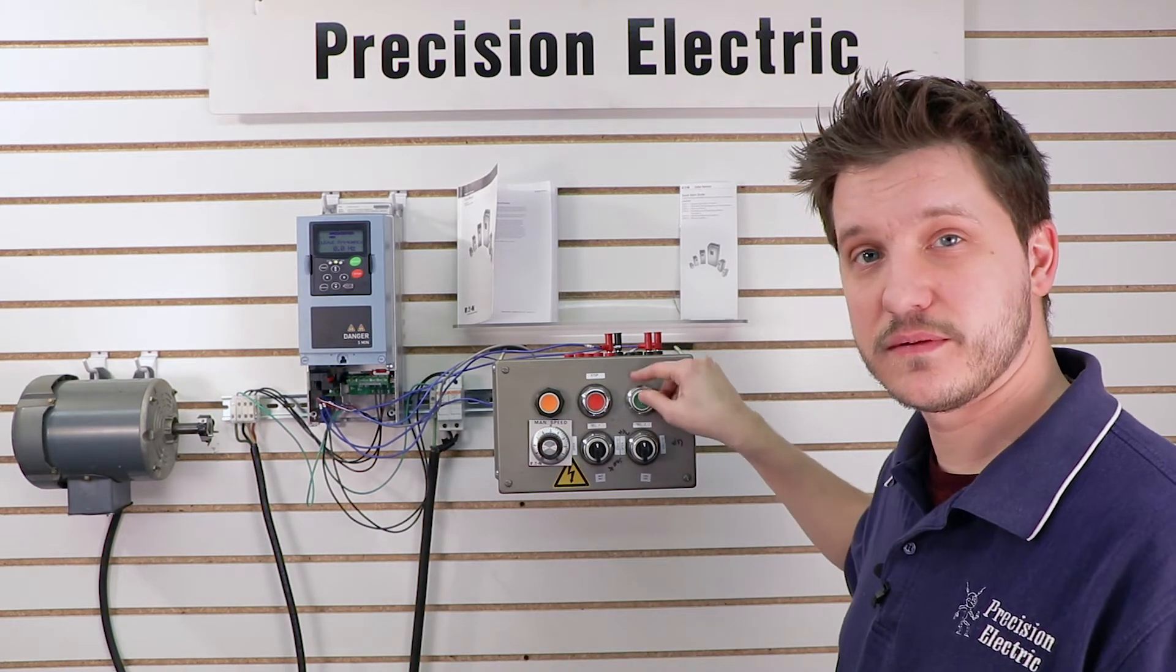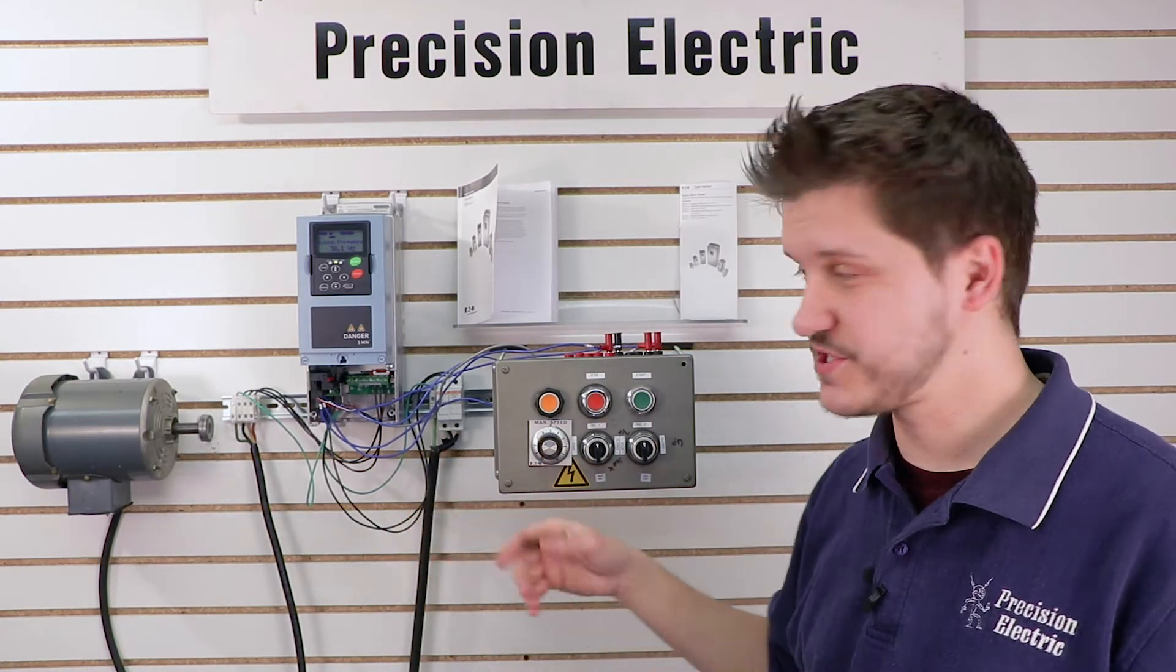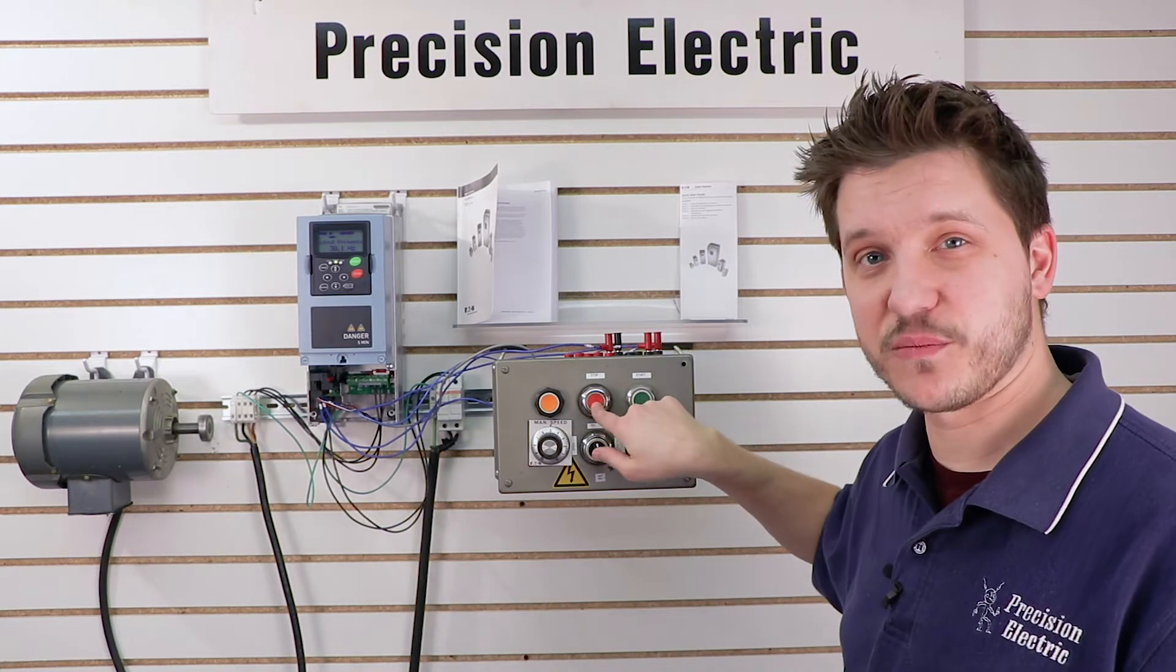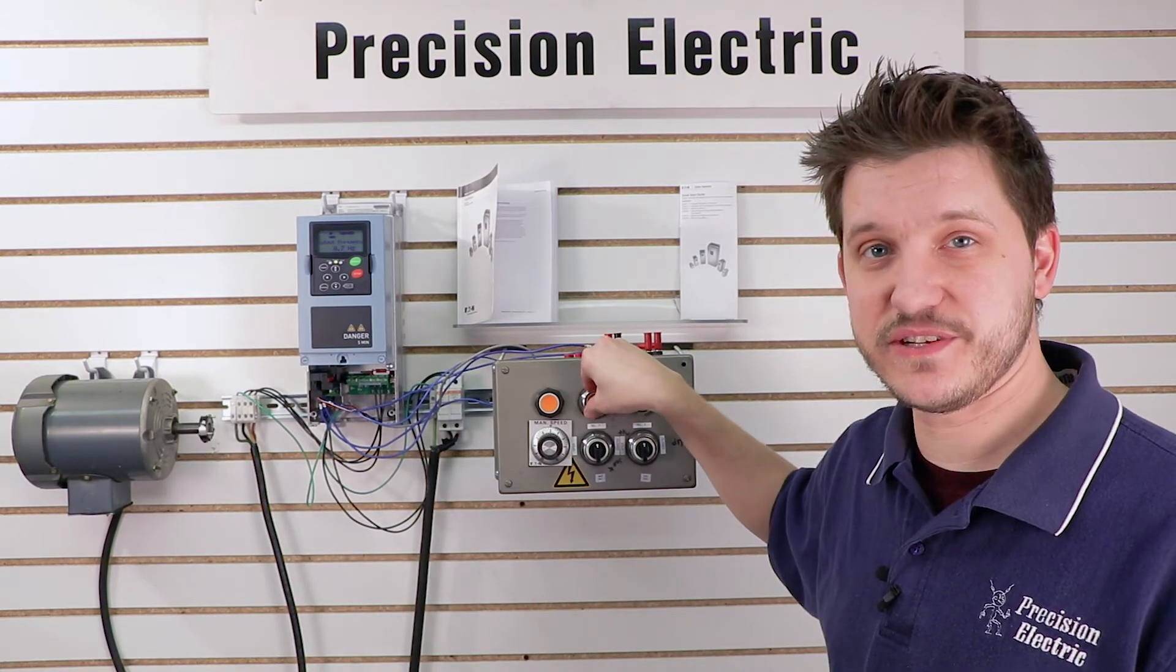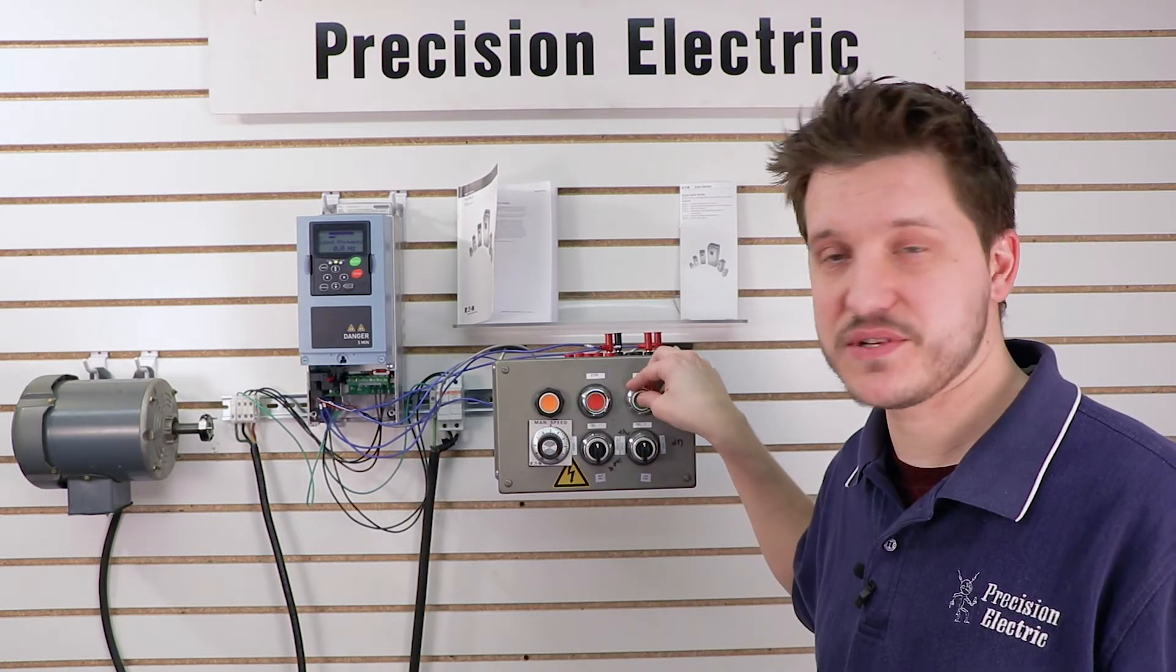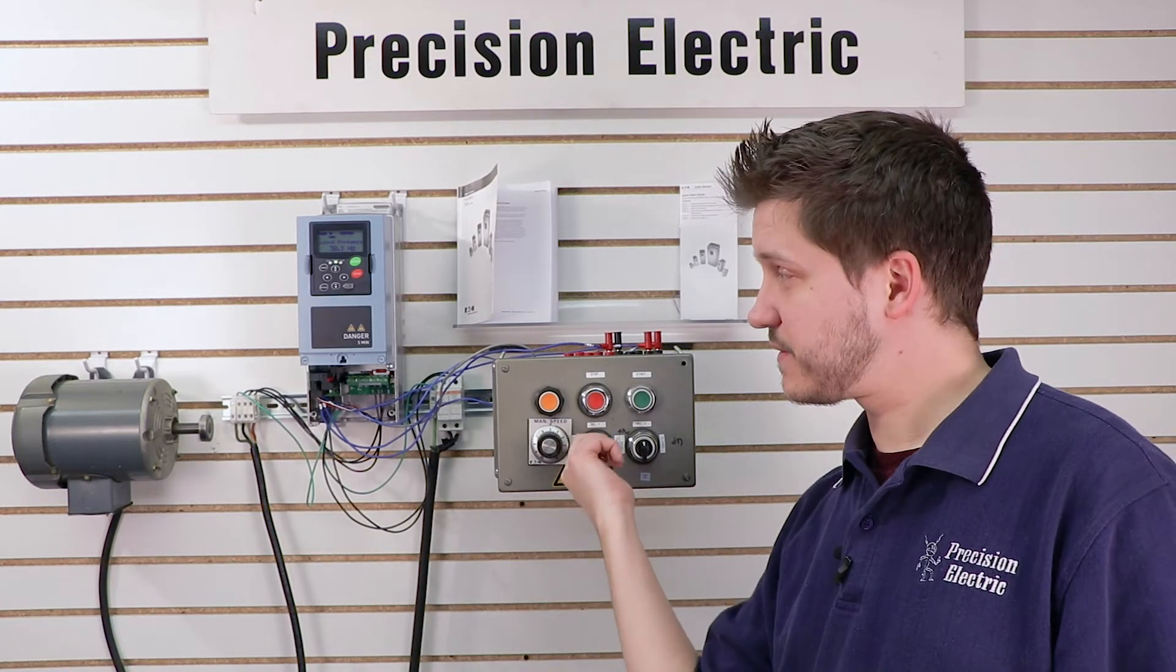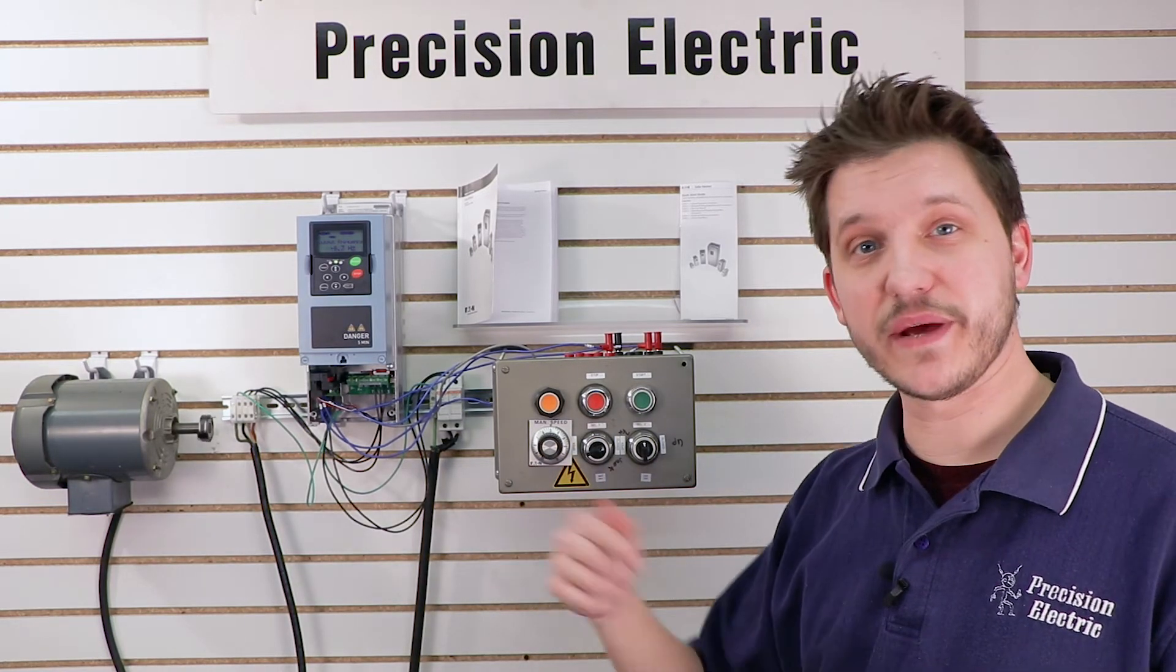Now here's my start button, if I press it, you'll notice that it starts, which is good. Now stop is my normally closed, so when I press this, it breaks that connection, so that it no longer will be running, so it stops. Now if I start it, and flip on my selector switch, it'll slow down and automatically go into reverse.